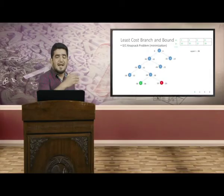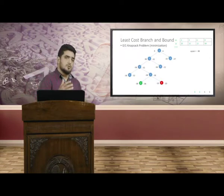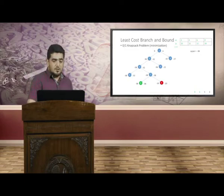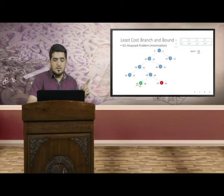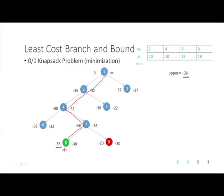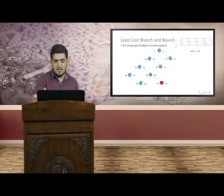As soon as we select node 8, we see that we are at level n plus 1, where n equals 4 items, so level 5. The approximate cost equals the upper variable, meaning we are at a leaf node and the upper value equals the least cost value — this is the solution node. The remaining nodes in the live list can be discarded; even if we generate their children, none of them leads to a solution node.